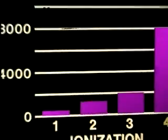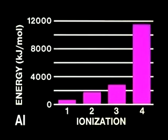Thus, each successive ionization requires more energy. This graph shows the way in which the ionization energies of the aluminum atom increase as successive electrons are removed.